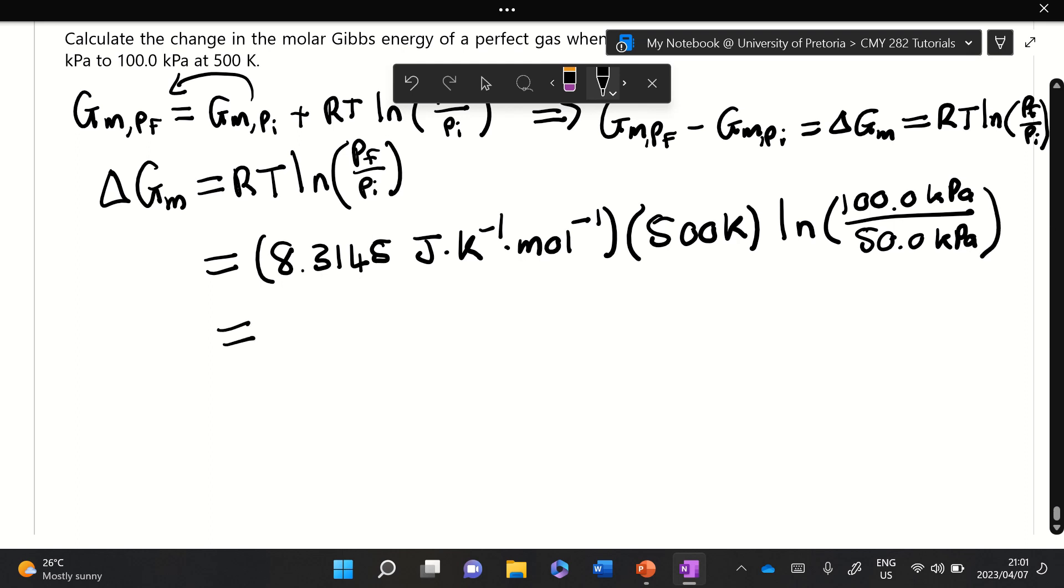Which should give a value of approximately 2.88 times 10³ joule per mole, which you can then round off to—we have three significant figures, 50 kPa and 500 kelvin—so 2.88 kilojoule per mole.